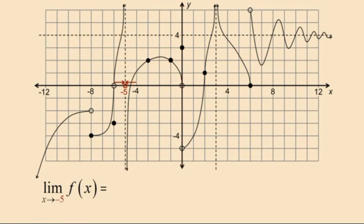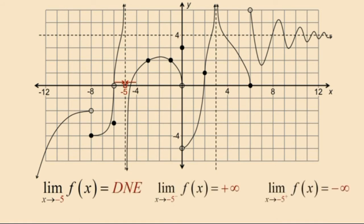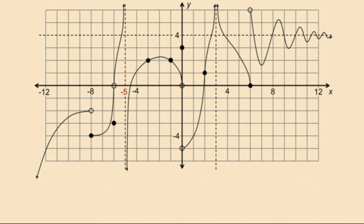One is increasing without bound and the other is decreasing without bound. Therefore we conclude that our two-sided limit does not exist. But what about the function value at x equals negative 5? Remember x equals negative 5 is not in the domain of our function. Therefore our function value is undefined.